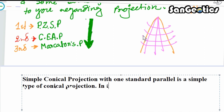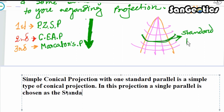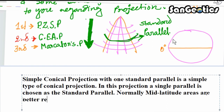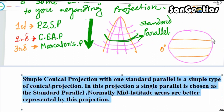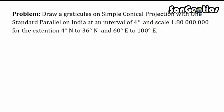In this projection a single parallel is chosen as the standard parallel. Normally, mid-latitude areas are better represented by this projection. Now I will calculate and construct the simple conical projection with one standard parallel.